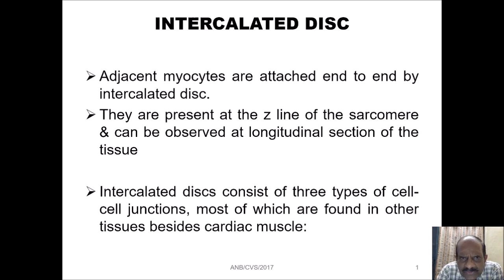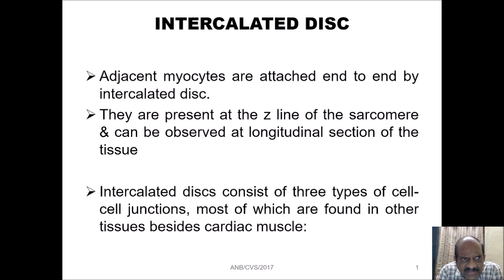Now we come to one of the important characteristics of cardiac muscle — the intercalated disc. The intercalated disc is present in cardiac muscle because these are zones of low resistance, which allows easy conduction of electrical impulses across the cell with minimum resistance. Adjacent myocytes are attached end to end by intercalated discs, present at the Z-lines of the sarcomere and observable in longitudinal sections of the tissue.